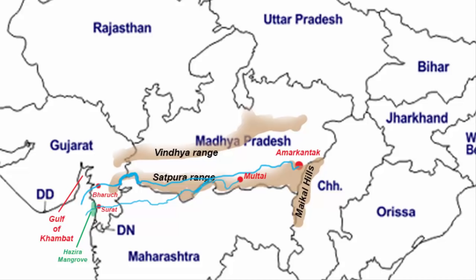The third river is Mahi. It rises from the Vindya range in Madhya Pradesh. It flows northwards at first into the Vagad region of Rajasthan, then takes a U-turn in the southwestern direction and enters the state of Gujarat to join the Gulf of Khambat. So most of its course lies in the Gujarat state.